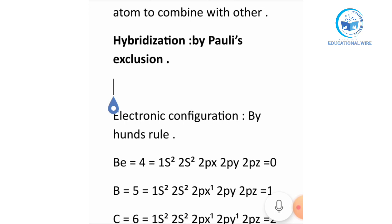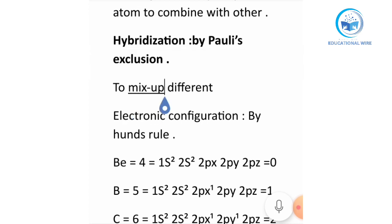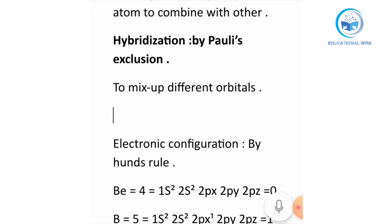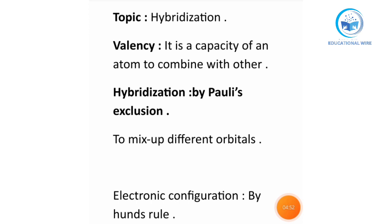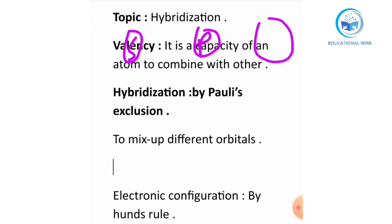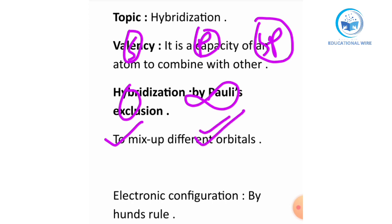So talking about hybridization by Pauli's exclusion rule — hybridization means to mix up different orbitals, orbitals with different shape and energy. For example, if we have two atomic orbitals — one is s, which has a spherical shape and lower energy, and one is p, which has a dumbbell shape and higher energy — when they hybridize, they combine together to form sp orbitals.